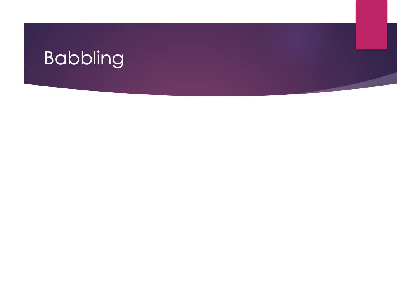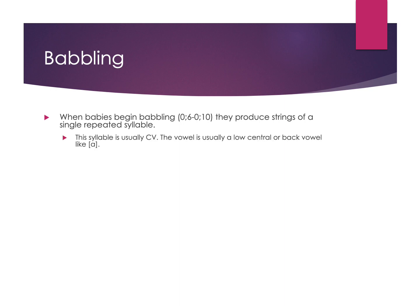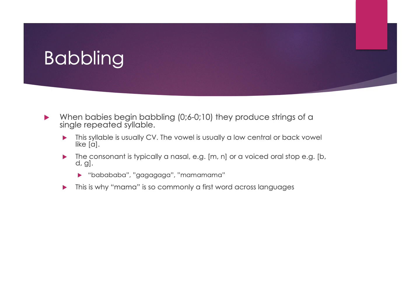Starting with babbling — babies begin to babble around six months or so, and they start to produce at first just a string of a single repeated syllable. Most of the time this is just consonant-vowel, consonant-vowel, and the vowel usually starts off as a low central or back vowel, something like an 'ah' sound. You'll typically have the consonant be a nasal or maybe a voiced oral stop at first, so the first kinds of things you'll hear are ba-ba-ba, ga-ga-ga, ma-ma-ma. This is part of why 'mama' is such a common first word across languages — these tend to be sounds we practice first when testing out motor control.